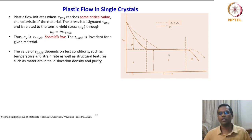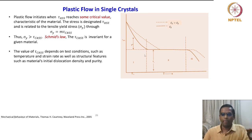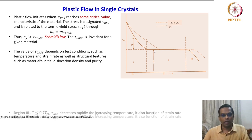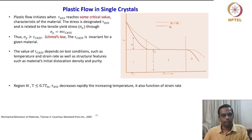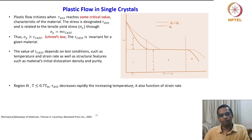The plot exhibits almost three regions — region 1, region 2, and region 3. In region 3, where T is less than or equal to 0.7 Tm, tau_CRSS decreases rapidly with increasing temperature.